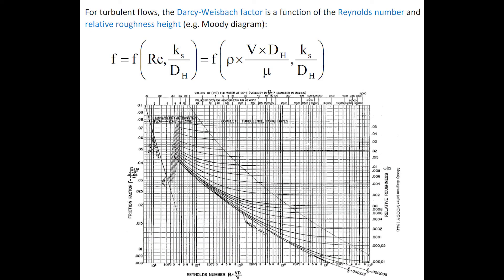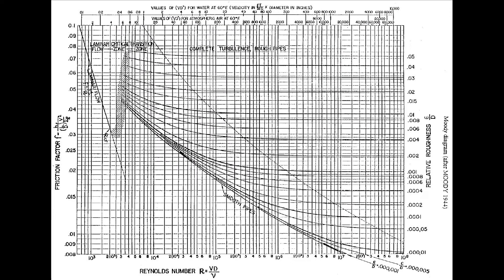For turbulent flow, the Darcy-Weisbach friction factor is a function of the Reynolds number and relative roughness height, as illustrated on the Moody diagram.